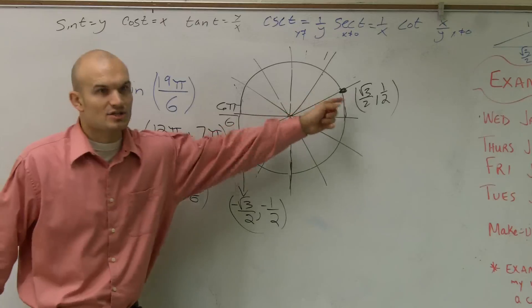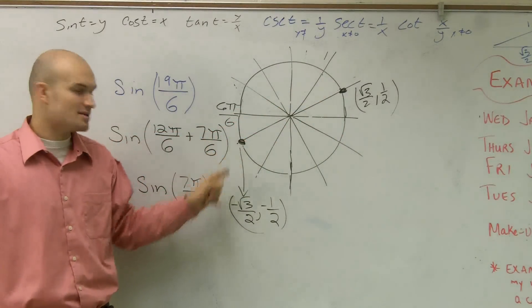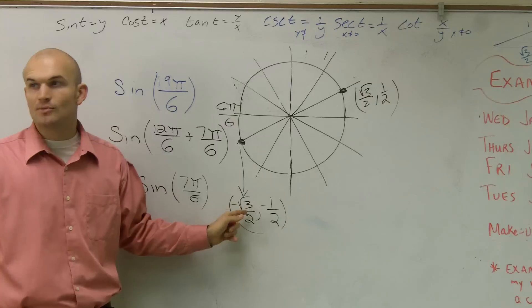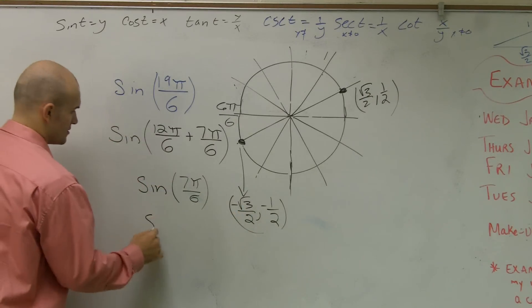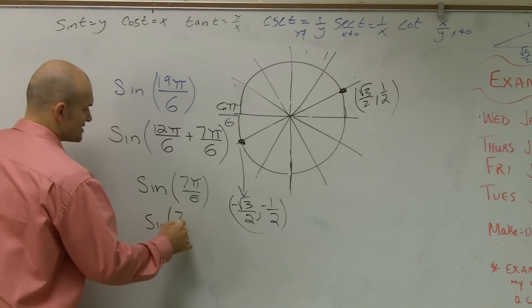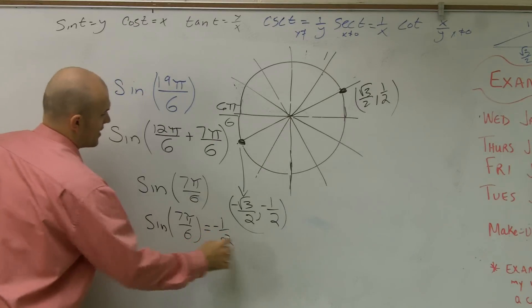Does everybody see how these are reflections of each other? They reflect the x-axis and they also reflect the y-axis. Therefore, my two coordinate points are both negative. So then if I want to find the sine of this, sine of 7π over 6 is equal to negative 1 half.